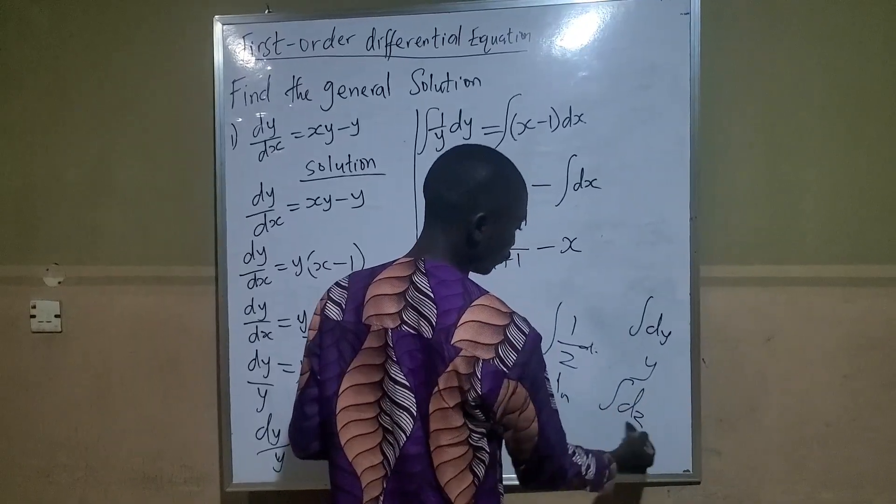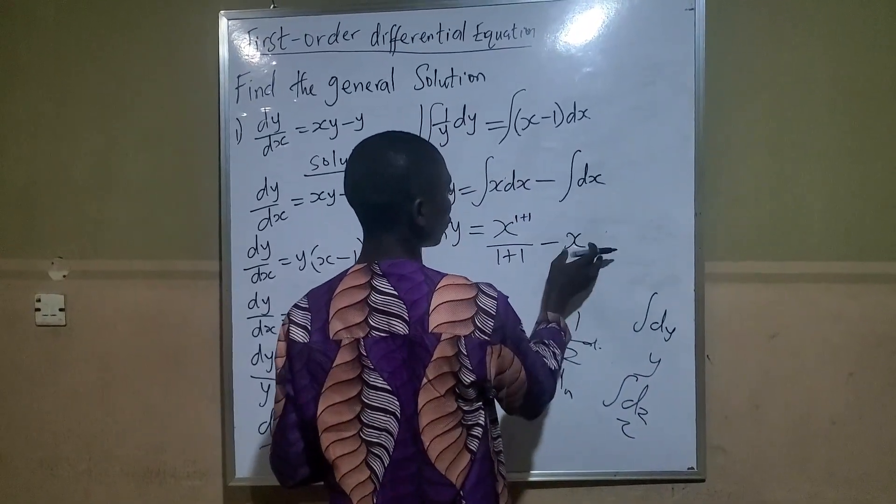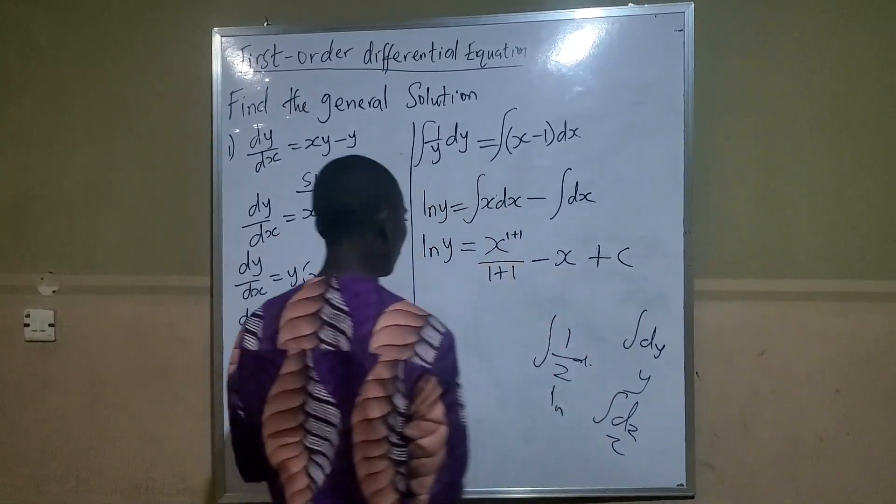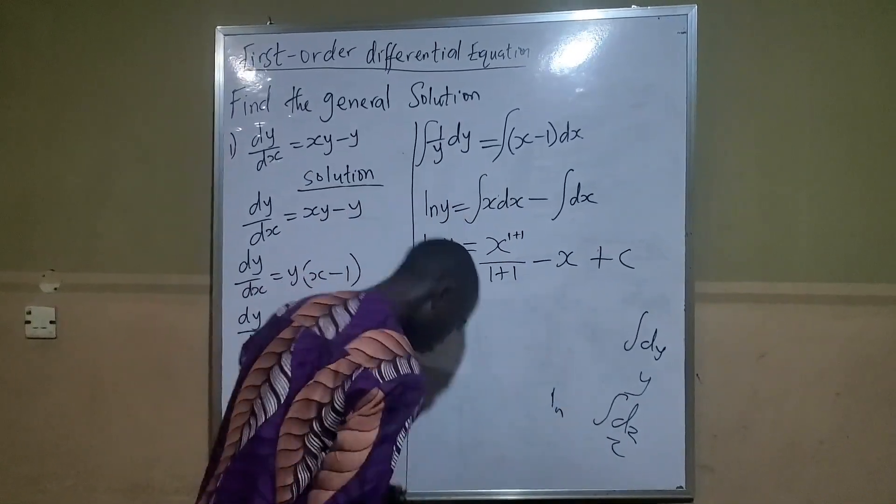If you are integrating dz, it gives z. So if you are integrating dx, it gives x. And don't forget to put your constant whenever you are integrating.